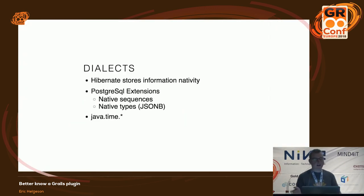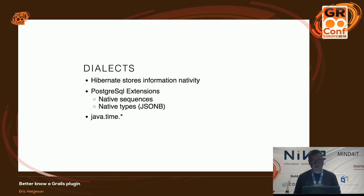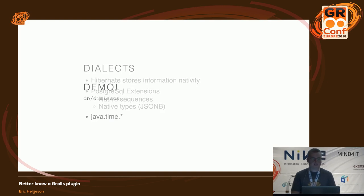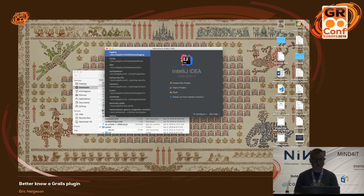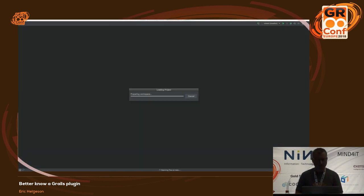Dialects tell Hibernate how to store something in your database. There's a PostgreSQL extension that helps a lot with native sequencing, native types like JSONB, and you can add one for Java Time serialization as well. You can also create your own — they're not too difficult and there are good examples out there.